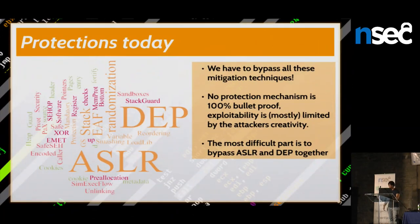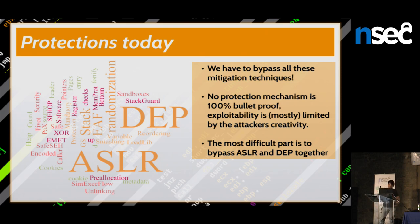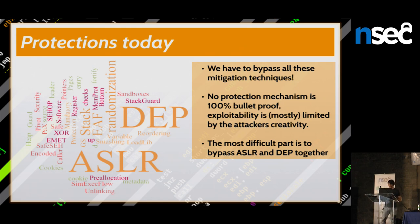In my opinion, exploitation 15 years ago was quite easy. For example, if you had a stack-based buffer overflow, you just had to pad until you reach the return address, overwrite it with an address pointing to the stack, place your shellcode there in front of a NOP sled, and everything would execute. Developing such an exploit was possible in five or ten minutes.